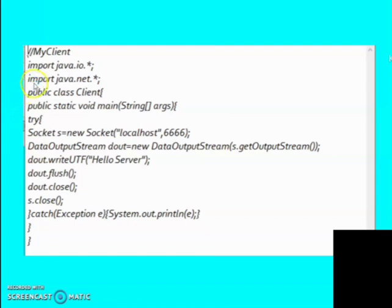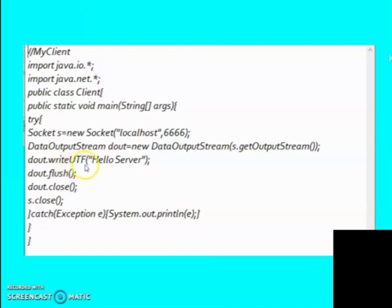DataOutputStream is used for sending output to the server side. Through the getOutputStream method we map output to the server side. We have used the write method to send the message to the server side in Unicode Transformation Format, that is UTF. As soon as the message is sent, we flush the dout object and then close the dout object and the socket. If the code has any exception, the catch block will run.